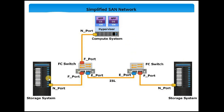This is a simplified SAN network. Here you can see a storage system, another storage system, two network switches, and a blade server — simply a host server. From what we discussed in the previous slide: N ports are always associated with storage arrays or servers, and the N port always connects to an F port located in the SAN switch or FC switch. E ports — expansion ports — connect to another expansion port of a different switch, and this connection is called an ISL, or Inter-Switch Link.